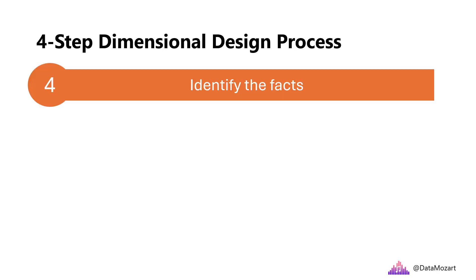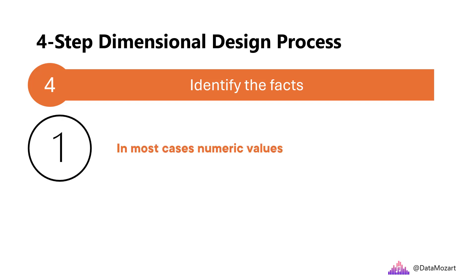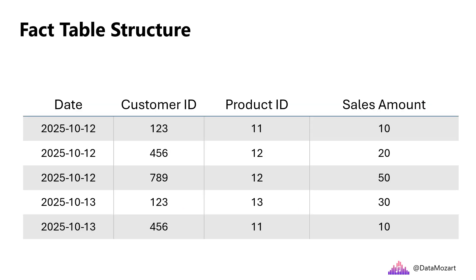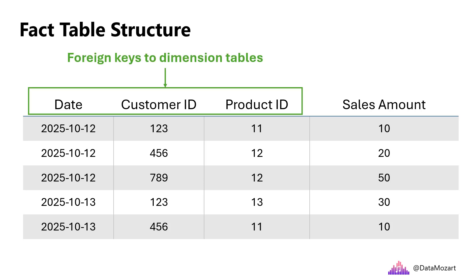The last step in this four-step dimensional design process is identifying the facts. If we think of a dimension as a lookup table, a fact table is the table that stores data about events — something that happened as a result of the business process. In most cases, these events are represented with numeric values: how many tickets did we sell, how much revenue did we make, and so on. The fact table has multiple key columns referred to as foreign keys to dimensional tables — in this case, a date, customer ID, and product ID — and one or more measurements, such as the sales amount in this example.